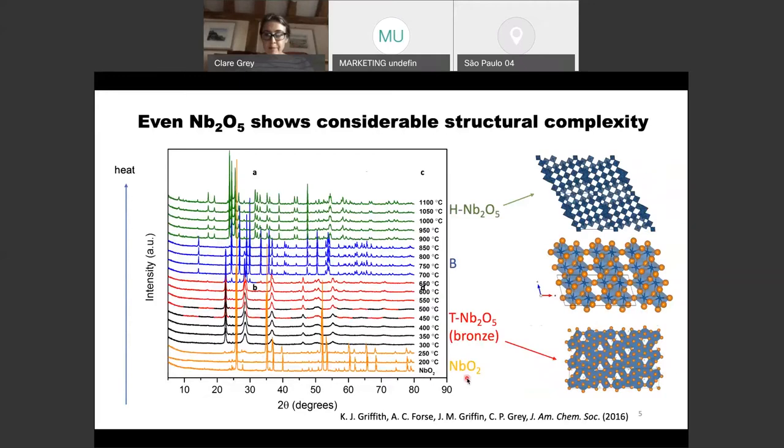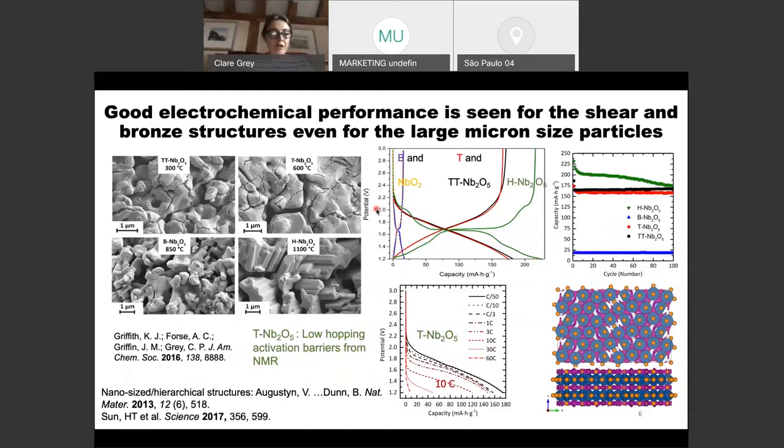Just to remind people who are not niobium experts that even Nb2O5 illustrates this massive structural polymorphism. This was the first study done by Kent Griffith now six years ago, published four years ago, where you heat up the niobium oxide compound that adopts the rutile structure. You go through the T phase, the B orthorhombic phase, and finally to the H phase at higher temperatures. You go from the bronze phase through to a Ti2B structure or related to that, to the H phase at the highest temperature. What Kent did was to show that even with these very large particles that you've generated from the T phases and the H phases from the NbO2 structure, you were able to get very high rates.